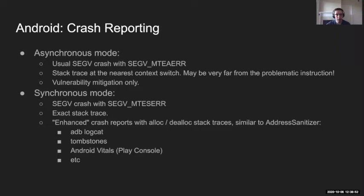We're also developing an API to enable sync mode and debugging features in the allocator at runtime. Asynchronous mode is primarily a mitigation — it prevents attackers from abusing memory corruption bugs but doesn't let you debug them. Synchronous mode, on the other hand, provides an exact stack trace of when the problem happened. We have extra support in the memory allocator to record allocation and deallocation stack traces and associate them with a particular fault. These enhanced crash reports include allocation and deallocation stack traces, size, and offset of the memory access — very similar to AddressSanitizer reports. They appear in Logcat, Tombstones, Play Console, Android Vitals, and so on.